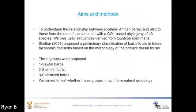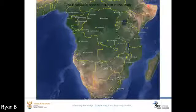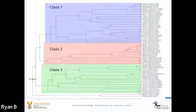We only used sequences derived from specimens collected at their type localities — this will become clear a bit later. Professor Skelton proposed a preliminary classification of barbs to aid future taxonomic decisions based on the morphology of the primary dorsal fin ray. He proposed three groups: the sawfin, spinyfin, and softray barbs, and we wanted to see whether these groups form natural groupings. Our results showed that Enteromius could be broken up into three main clades.